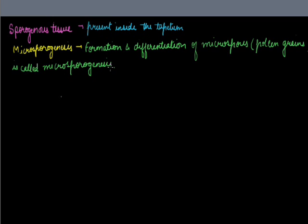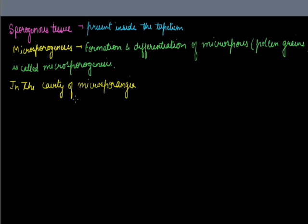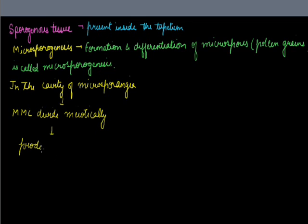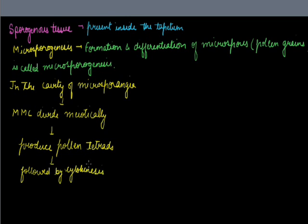In microsporogenesis, in the cavity of the microsporangium, the microspore mother cells undergo meiosis, which is followed by cytokinesis, producing a pollen tetrad. Thus each microspore mother cell produces a tetrad of microspores, which are called a pollen tetrad.